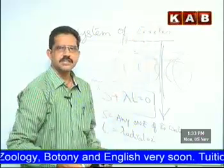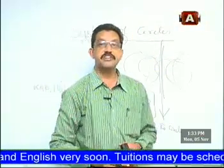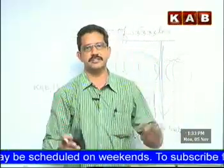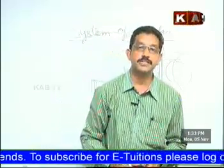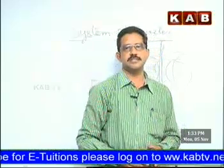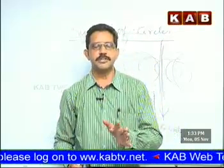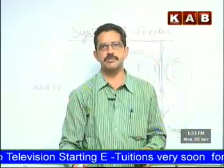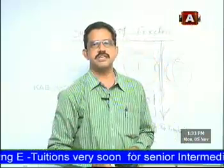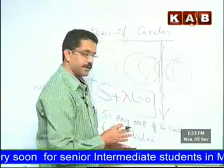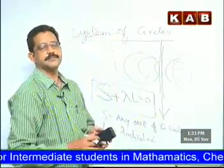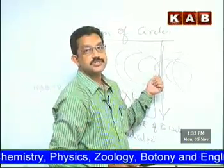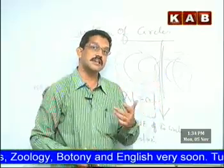In this system, there are many circles. Circles having zero radius — point circles — are called limiting points. In the coaxial system, circles with zero radius are called limiting points.